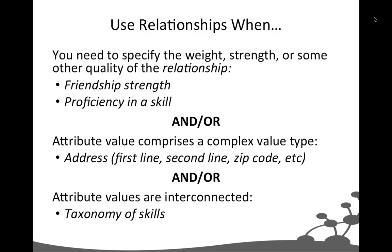The second reason to use a separate node is if the attribute value itself is a complex value type — if it has a number of different fields. An address is the great example: it has a first line, second line, zip code, and so on. The third reason is if those attribute values are connected to each other in an interesting way — for example, skills might be part of a taxonomy and related amongst themselves, so you'd pull them out and build up a skills hierarchy.